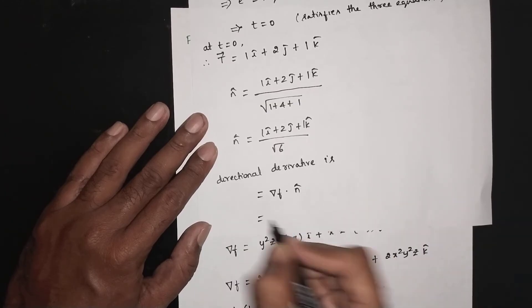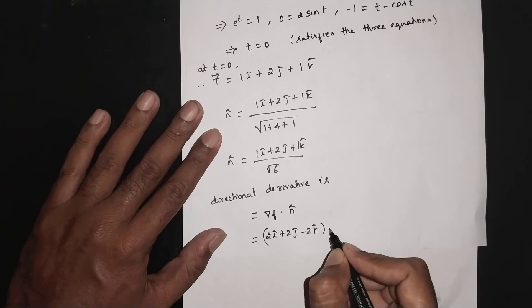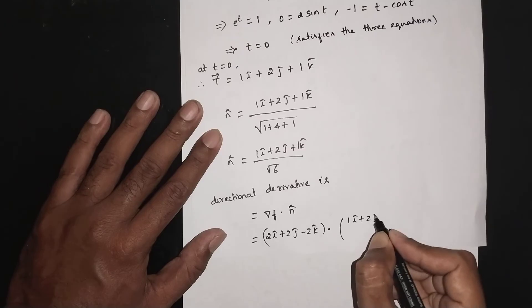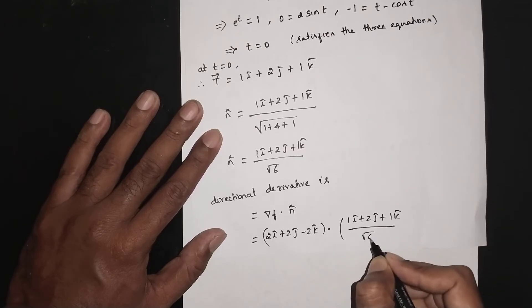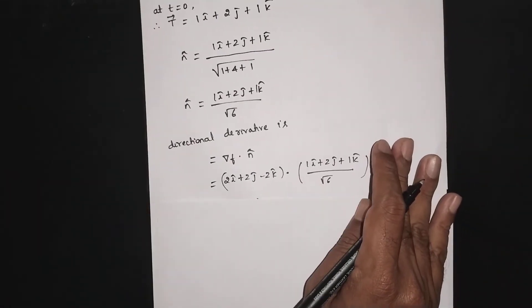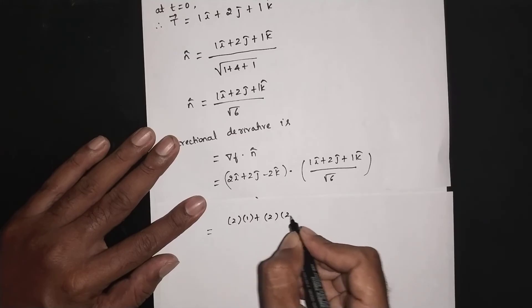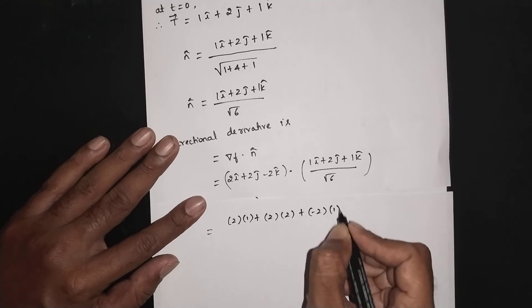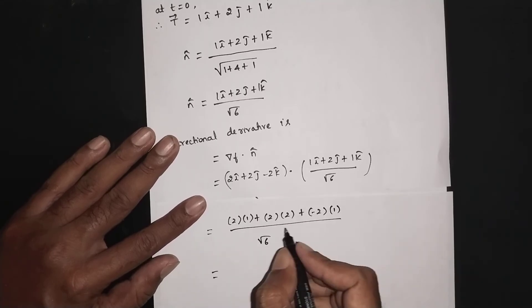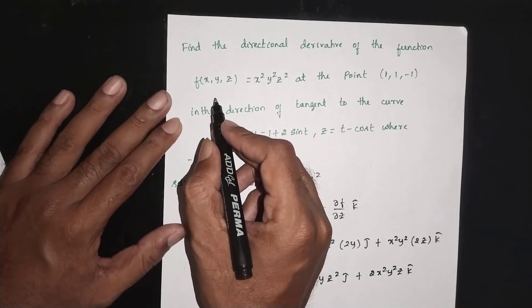Directional derivative = ∇f · n̂. ∇f = 2i + 2j - 2k (at the point). The unit tangent vector n̂ = (i + 2j + k) / √(1² + 2² + 1²) = (i + 2j + k) / √6. Dot product: 2·1 + 2·2 + (-2)·1 = 2 + 4 - 2 = 4. Therefore the directional derivative = 4/√6.